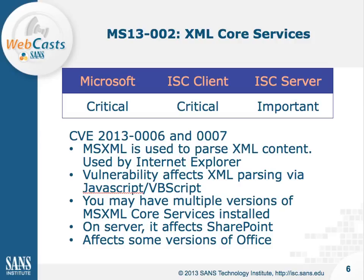On the server, it could also affect software that parses XML. Microsoft's bulletin points out SharePoint as an example — someone could upload an XML document to a SharePoint site and it would be parsed using this library. The same applies to Office. But the most likely vector is Internet Explorer, and that's why I think this is probably the most critical vulnerability in this particular set of patches.